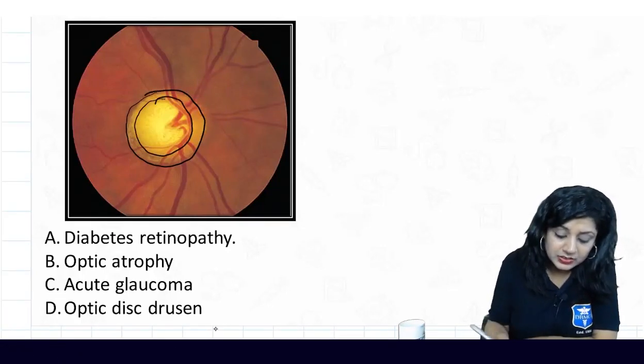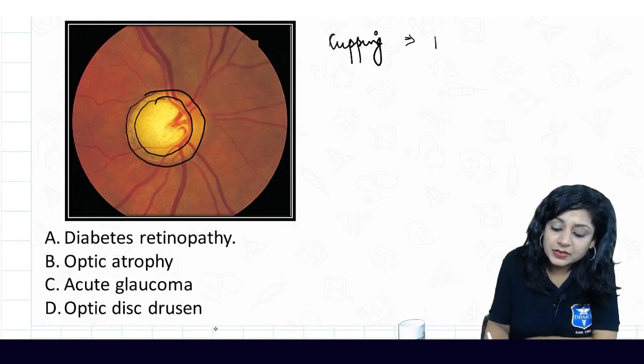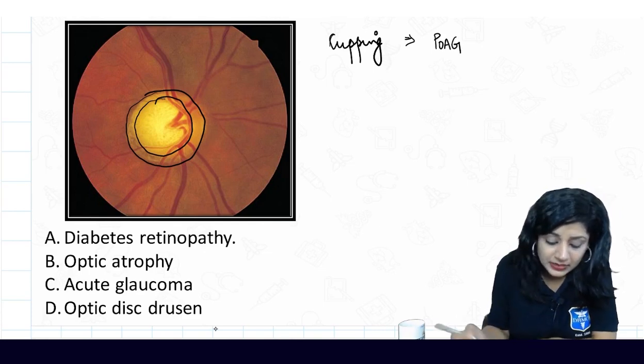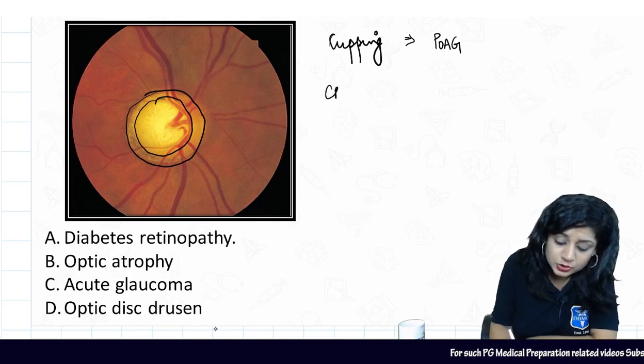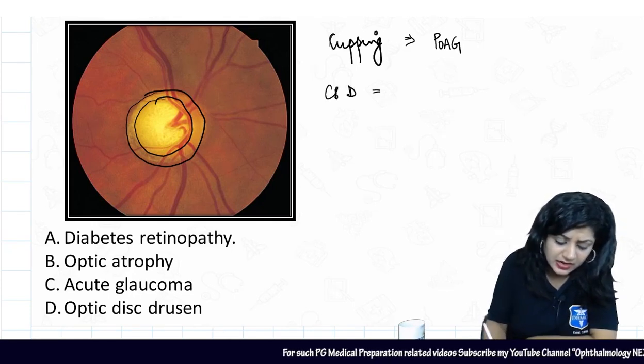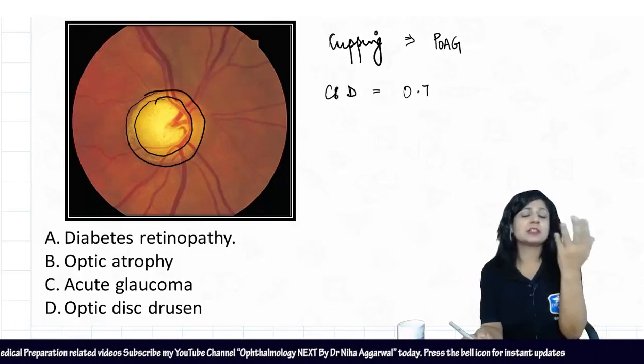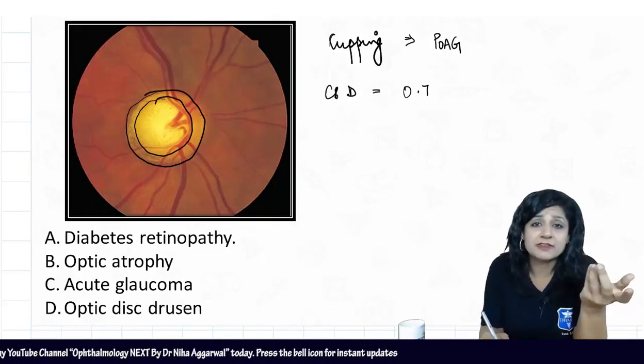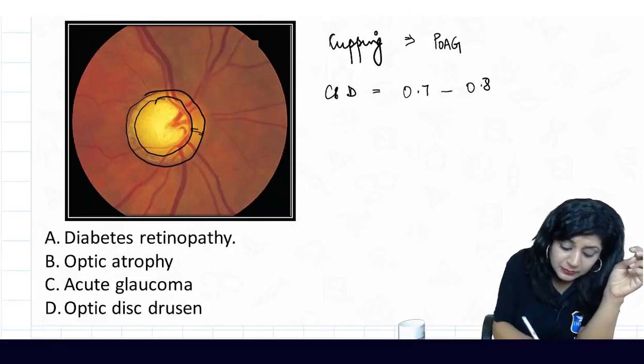Right, so this is actually cupping. And where do you get cupping? Cupping we get in cases of usually chronic simple glaucoma or the primary open angle glaucoma. If you can see here, the CD ratio is quite large, it is somewhere around 0.7 or 0.8.